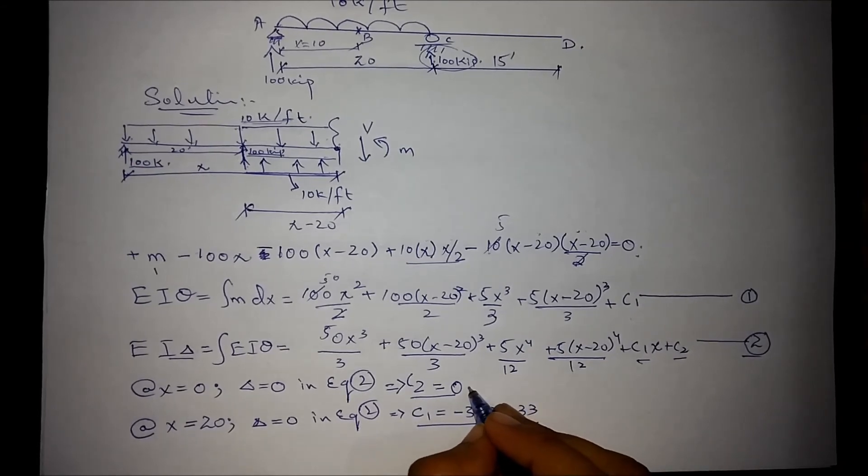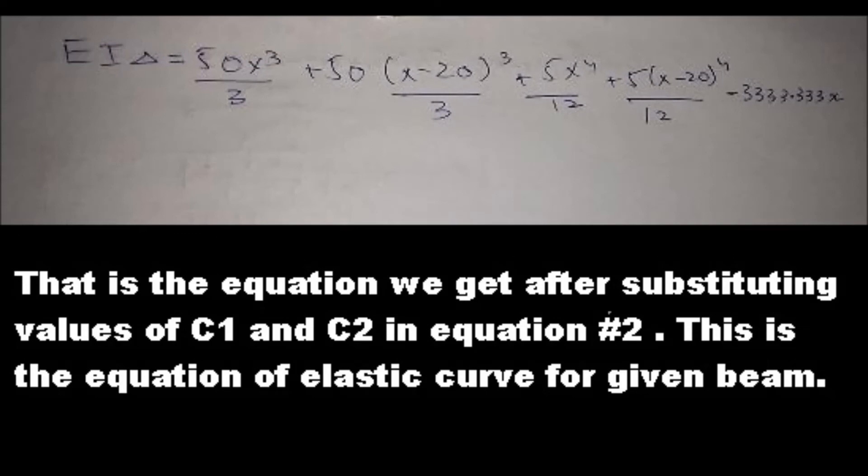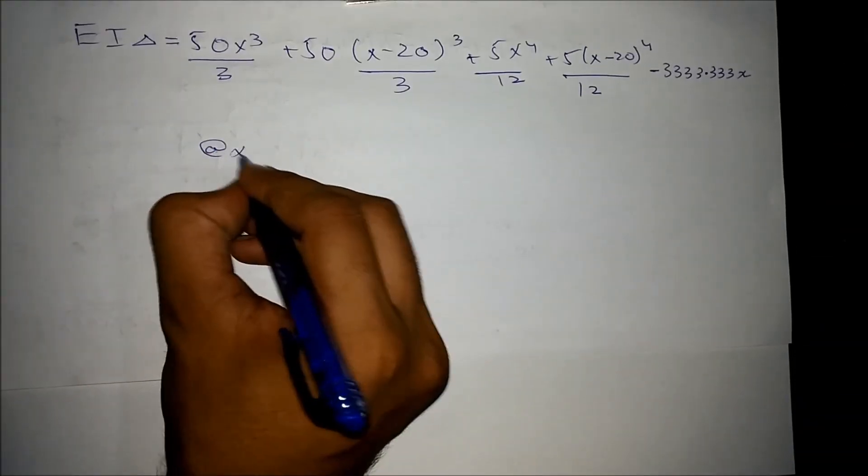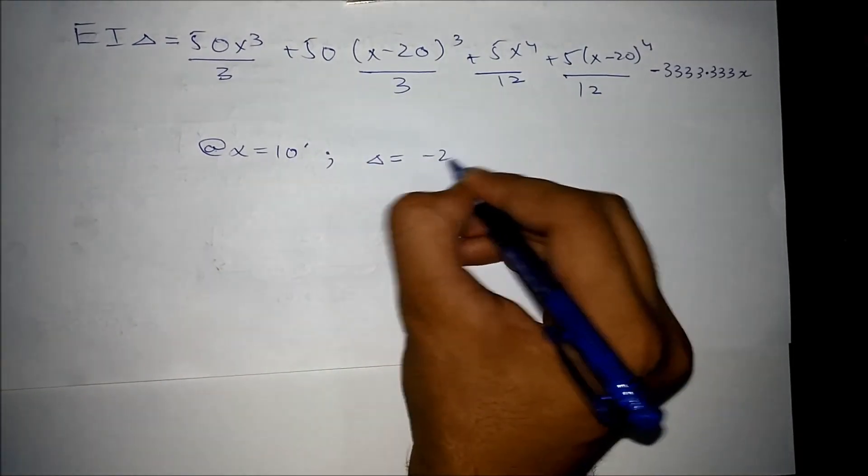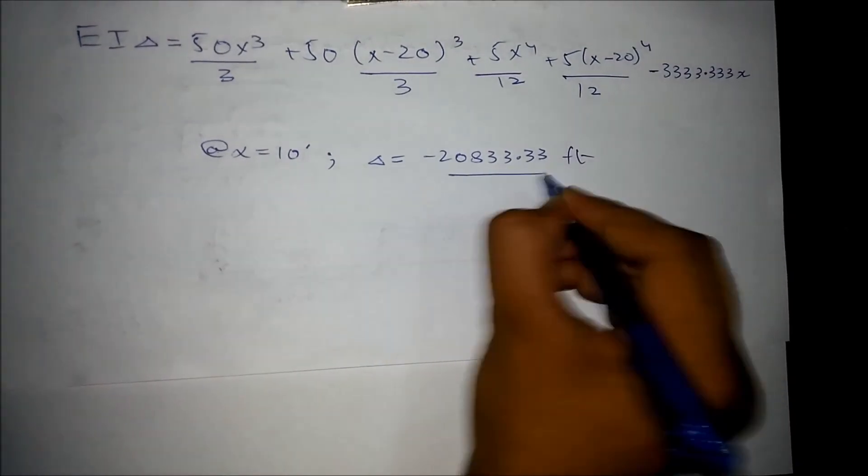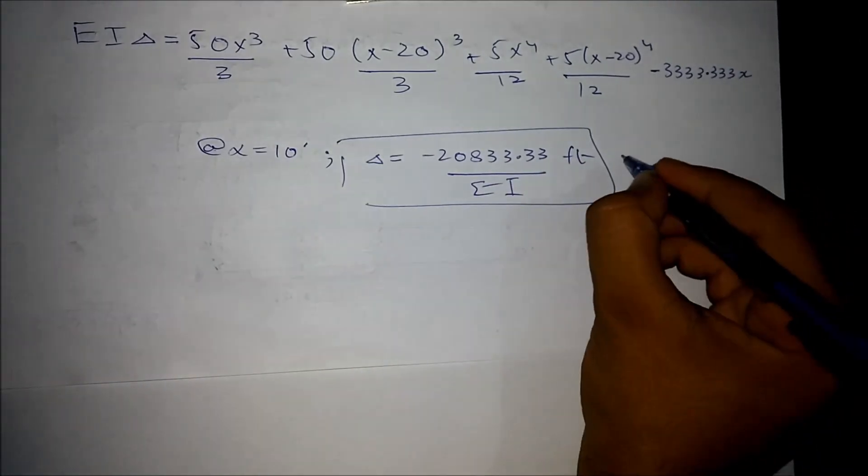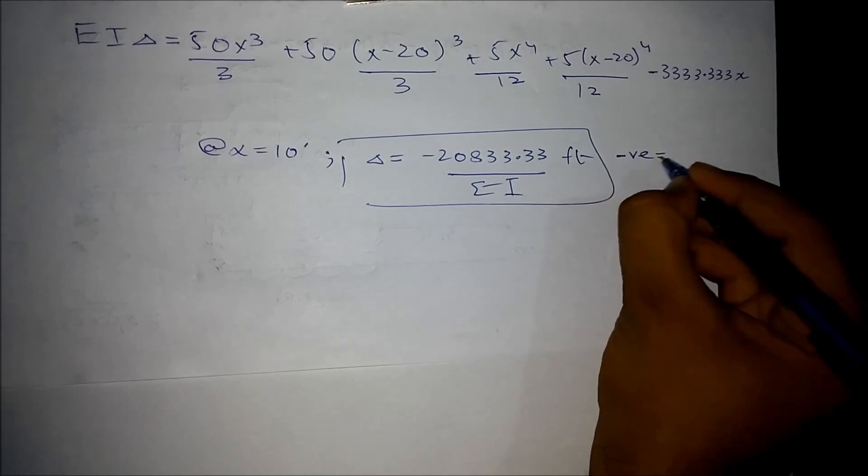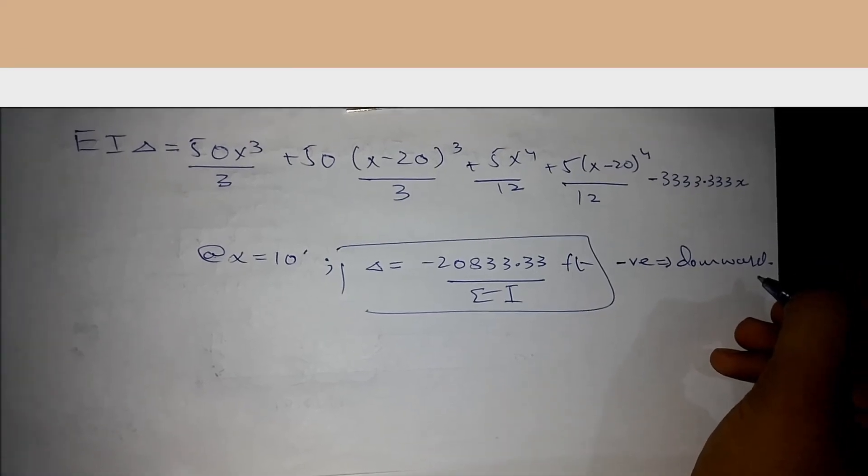Now substituting the value of c1 and c2 into equation number 2, at x equals to 10 feet we get the deflection as minus 20,833.33 feet over EI. The negative value represents that it is downwards. Thanks for watching.